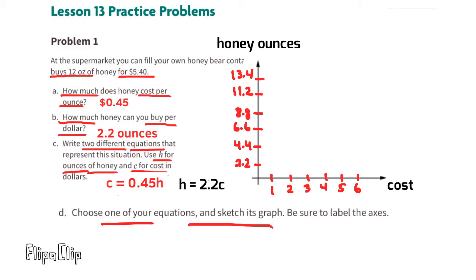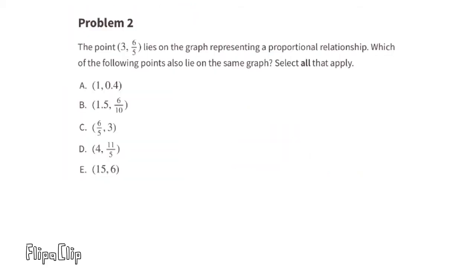The horizontal axis represents the cost and the vertical axis represents ounces of honey. As you can see on this graph, $1 could buy 2.2 ounces of honey, and $3 could buy 6.6 ounces of honey.